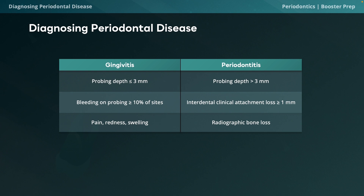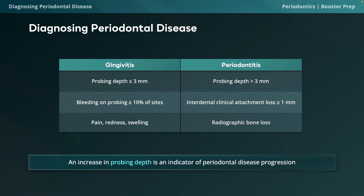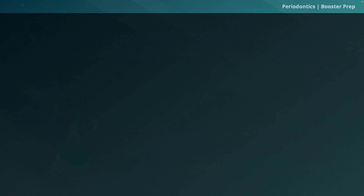A diagnosis of gingivitis consists of probing depths less than 3 mm, bleeding on probing at least 10% of sites, sometimes pain, and redness and swelling of the gingiva. A diagnosis of periodontitis consists of probing depths greater than 3 mm, CAL of at least 1 mm, and radiographic bone loss. An increase in probing depth is an indicator of periodontal disease progression. The key difference: clinical attachment loss and bone loss occur only in periodontitis.